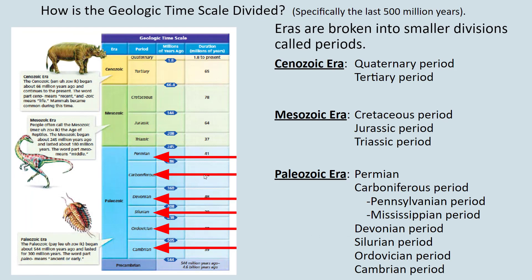We also divide these eras into something called periods. The Paleozoic era is made up of the Permian, Carboniferous, Devonian, Silurian, Ordovician, and Cambrian periods. The Mesozoic is split into three periods: the Cretaceous, the Jurassic, and the Triassic. And all of a sudden — look at that — the word Jurassic! You've heard this word a bazillion times: Jurassic Park, Jurassic World.